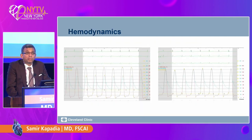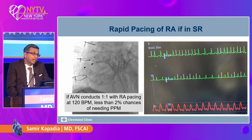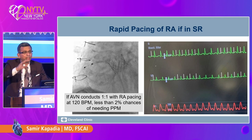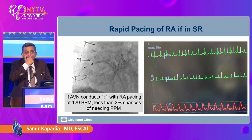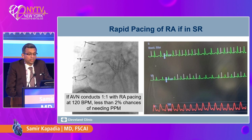Every patient, we measure the hemodynamics carefully. Something novel that we do at the end of the procedure is take the pacemaker out of the right ventricular apex, put it in the right atrium, and pace the right atrium at 90, 100, 110, and 120 beats per minute. If they conduct one-to-one, then we think that patient can be discharged home the same day.